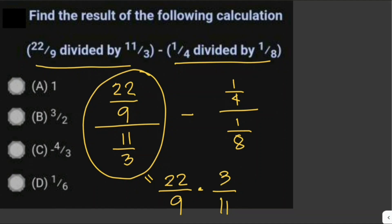22 is divisible by 11: 22 divided by 11 is 2. And 9 is divisible by 3: 9 divided by 3 is 3. So this simplifies to 2 over 3.